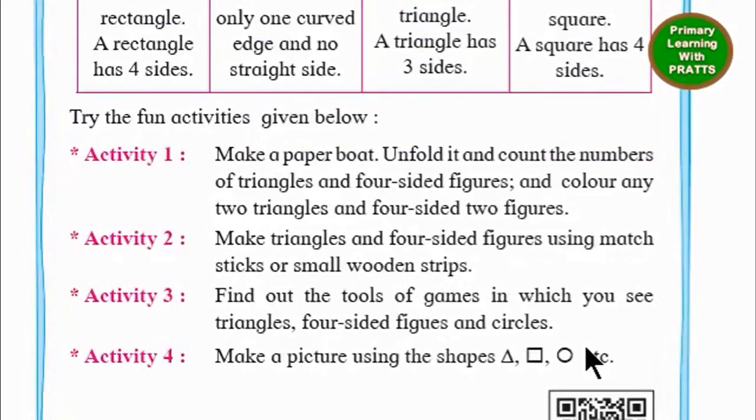Now you can do these fun activities at home and try out these shapes. Activity 1: Make a paper boat, unfold it, and count the number of triangles and four-sided figures. Color any two triangles and two four-sided figures.